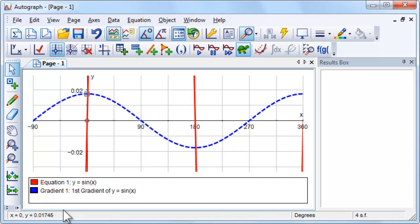If this seems surprising, think back to first principles and consider the derivation of the gradient function of sine x. What part of the derivation relies on x being measured in radians?